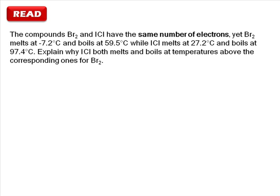If you look at the periodic table, you'll find that Br2 is 35 plus 35, which equals 70, and ICl is 53 plus 17, which is also 70.